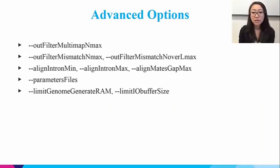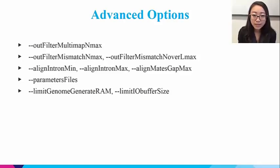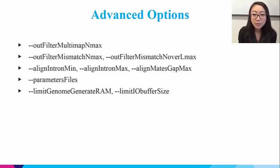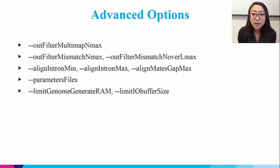As for advanced options, the most frequently used ones are maximum number of multiple loci reported per read, maximum mismatches allowed for a single read, minimum and maximum intron size, and gap size parameters. Make sure that you know what you're doing when you adjust these parameters — if you do not have RNA-seq experience, simply go with the defaults for STAR. Instead of typing everything in the command line, you can also specify the parameters in a file and load it with STAR using the parameters files option. Another interesting parameter is to limit the RAM use and IO buffer size.